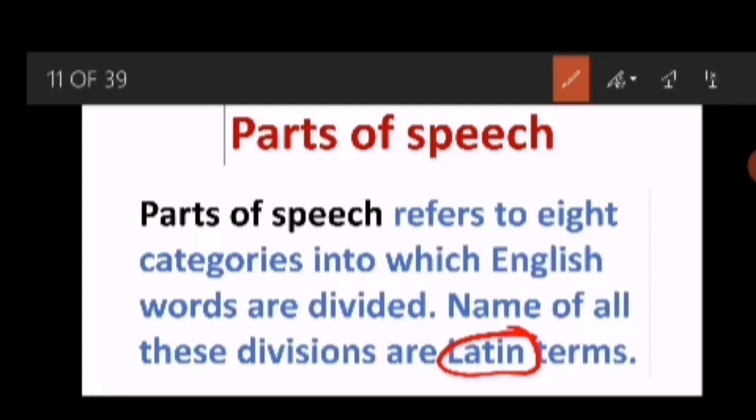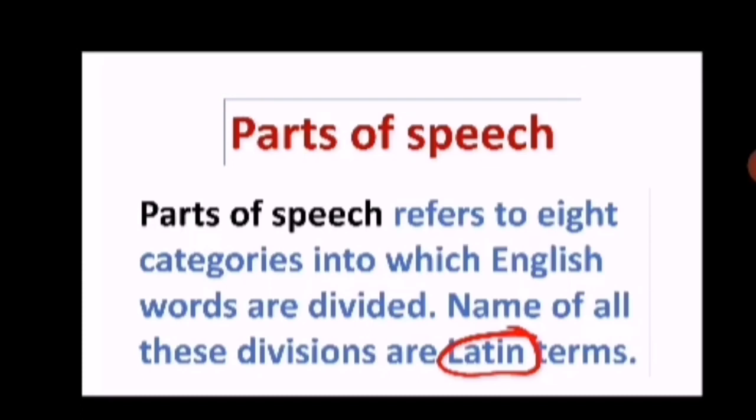So, vocabulary of English is basically based on these two, though it is called inclusive language as it welcomes many other words from different languages. As we are having the base language Sanskrit for our mother tongue Hindi, same way English has these two main origins. What are those? Greek and Latin. So, here we are going to learn about parts of speech which basically are Latin terms. Now, all these eight categories can be named like this.